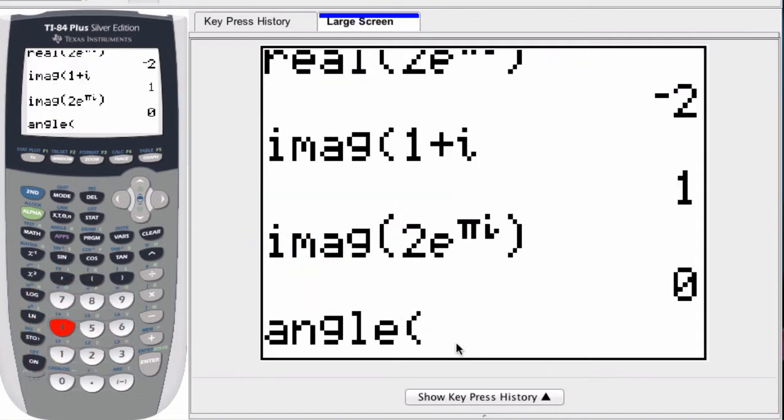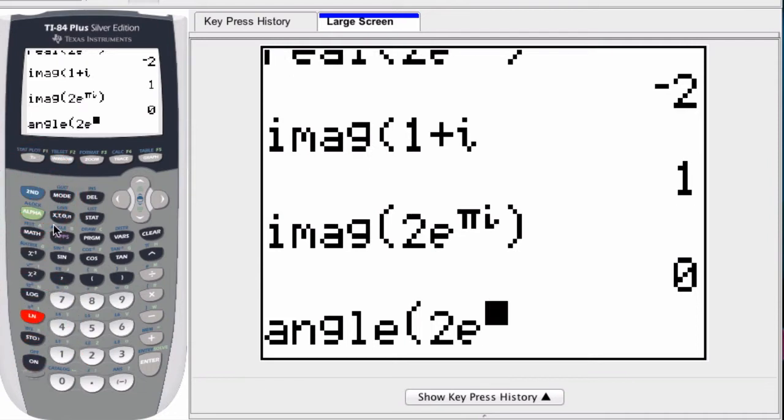What this does is it can pull up the angle from a rectangular or polar complex number. So if I enter in a polar complex number like 2e to pi times i, we're in radian form, and press enter,